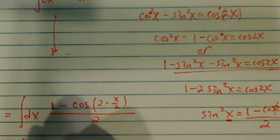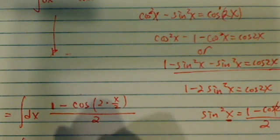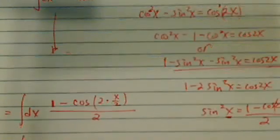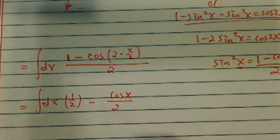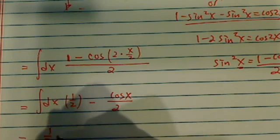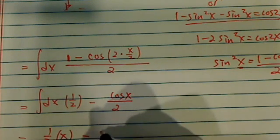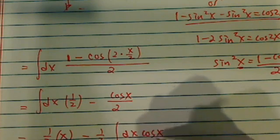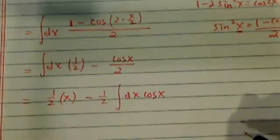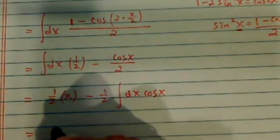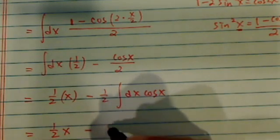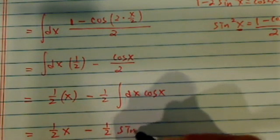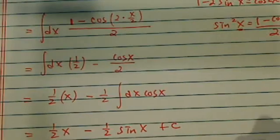From there, the rest is pretty easy. You have dx, half here, minus half of cosine of x. That becomes half of x minus half times the integral of dx cosine of x, which is sine of x. So it equals half of x minus half of sine of x plus c to be complete.